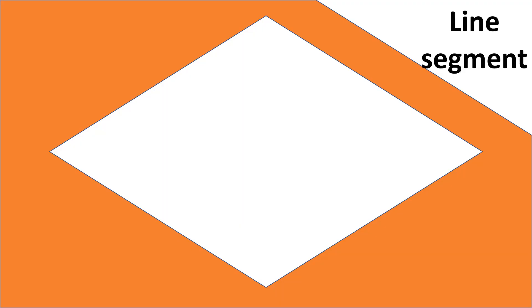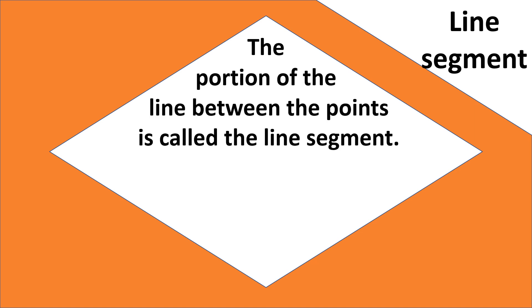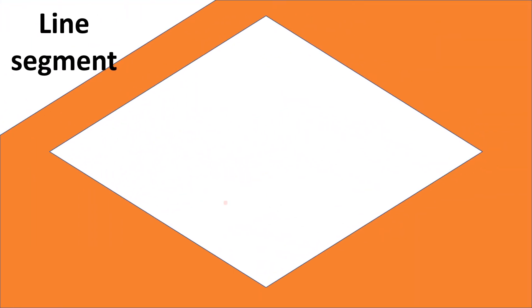Therefore we can say that the portion of a line between two points is called the line segment. From point A to point B it is a line segment. Points A and B are called endpoints, so a line segment has two endpoints.